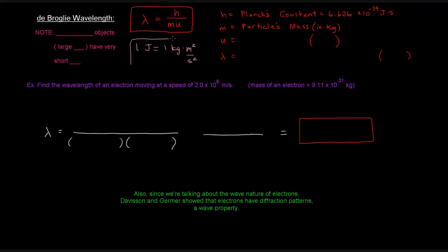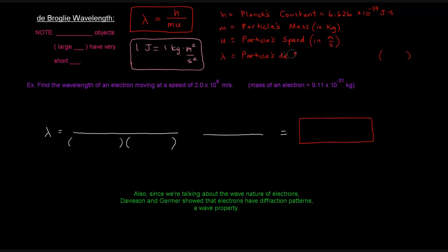It's very important to remember that the particle's mass must be in kilograms. u is the particle's speed, specifically in meters per second — again, for the units to cancel. And lambda is the particle's de Broglie wavelength in meters.